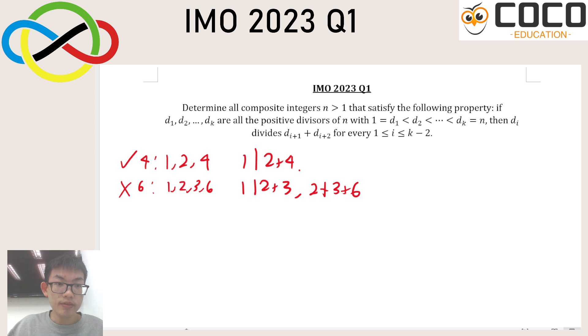The next number that is composite is 8, with factors 1, 2, 4, and 8. Now, 1 divides 2 plus 4, and 2 also divides 4 plus 8. So 8 does work.